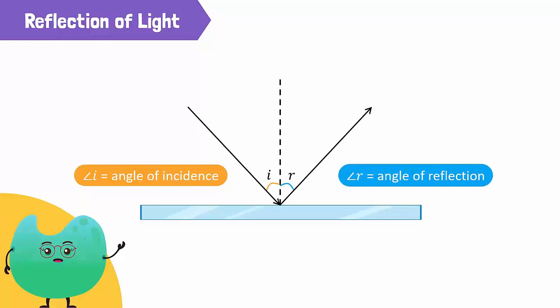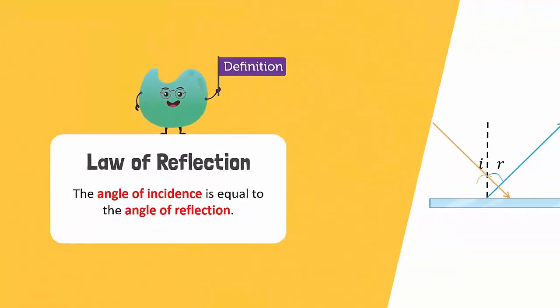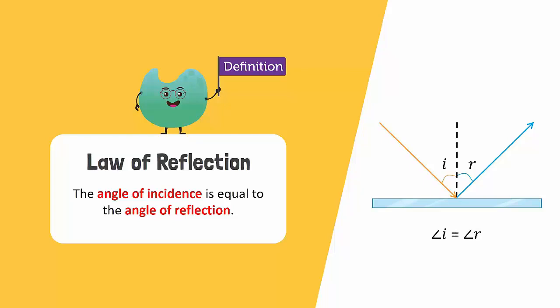Like the angle of incidence, it is also measured from the normal. So, according to the law of reflection of light, the angle of incidence is equal to the angle of reflection.